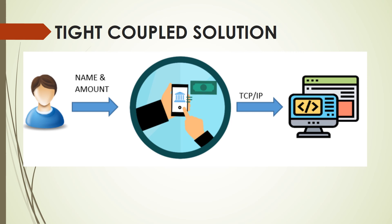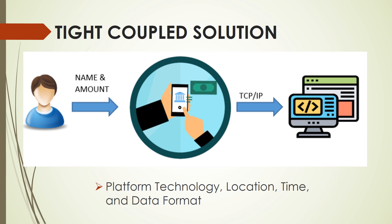However, it is brittle since the two parties involved make the following assumptions about each other. First, the platform technology — the internal representations of numbers and objects, for example 32-bit or 64-bit. The location — hard-coded machine addresses. The time — all components have to be available at the same time. And lastly, the data format — the list of parameters and their types must match. When two systems communicate, coupling is a measure of how many assumptions they make about each other. The participants must make a number of assumptions in order to follow the example, and as a result the solution is inextricably linked.